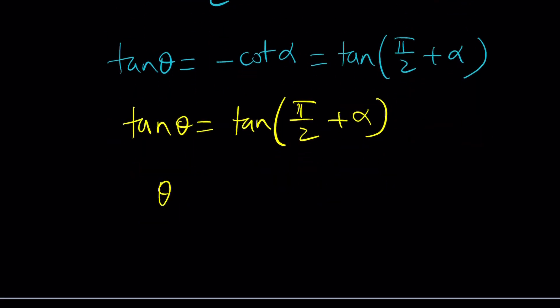Now we got this nice equality. Tangent theta is tangent pi over 2 plus alpha. We can simply say that theta can be pi over 2 plus alpha. We were looking for theta minus alpha, which equals pi over 2. And of course, the difference can also be negative pi over 2 or 3 pi over 2. Anyways, this was the first method.